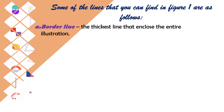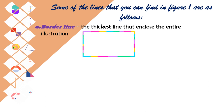The following are the different alphabet of lines. The first one is the borderline. The borderline is the thickest line that encloses the entire illustration. This is an example of a borderline.